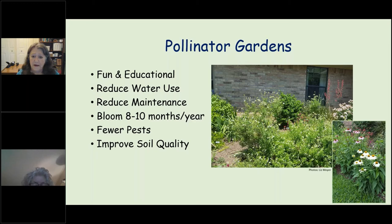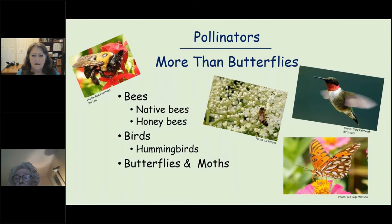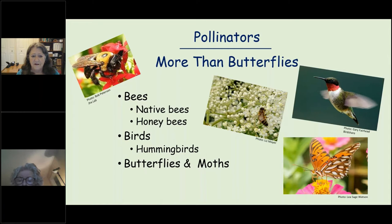Native plants also give you reduced maintenance — not zero maintenance, but much less than replanting half your yard every season. You can have blooms from eight to ten months a year, sometimes all twelve depending on the weather. You'll have fewer pests and improved soil quality over time. Pollinators are a lot more than butterflies — bees actually do more pollinating than butterflies, and we have lots of honey bees and native bees in this area.